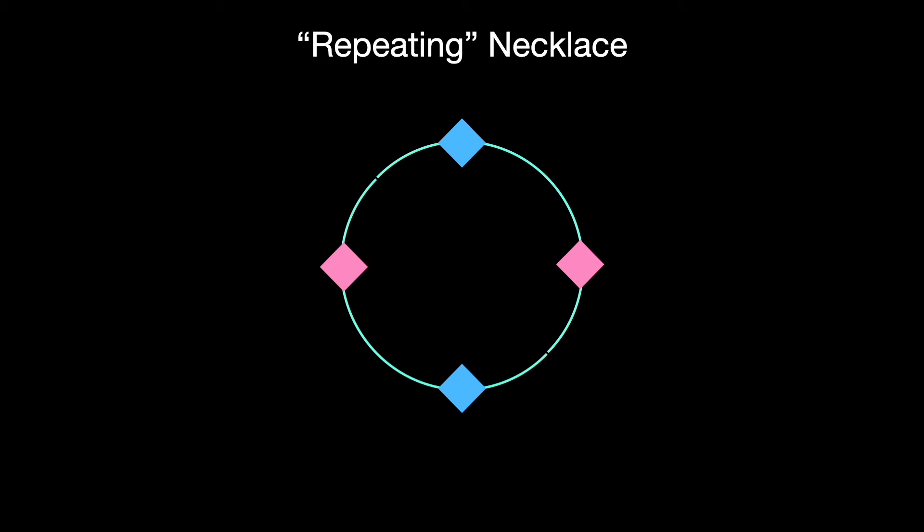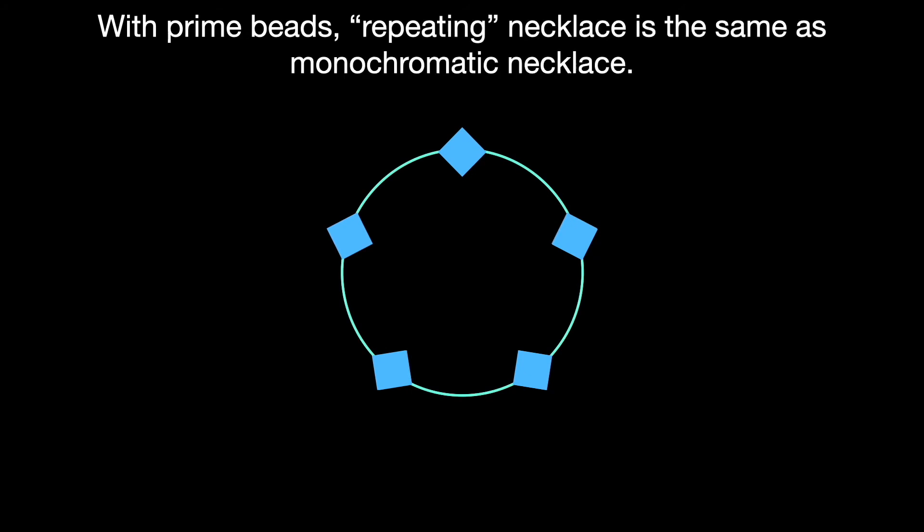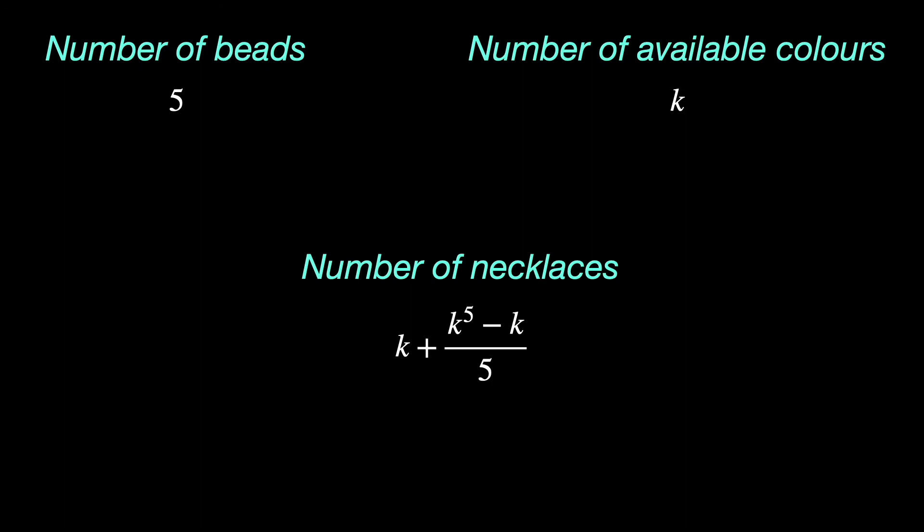Well, now that we understand why we got a wrong answer for four, why can't we have a similar scenario with five beads? The key point here is that five is a prime number. If any smaller part of a necklace repeats, then the number of beads in it must have to divide the total number of beads. If the total number is a prime, its only proper divisor is one. And so the smaller part must be just a single bead, which if it repeats, our necklace is monochromatic.